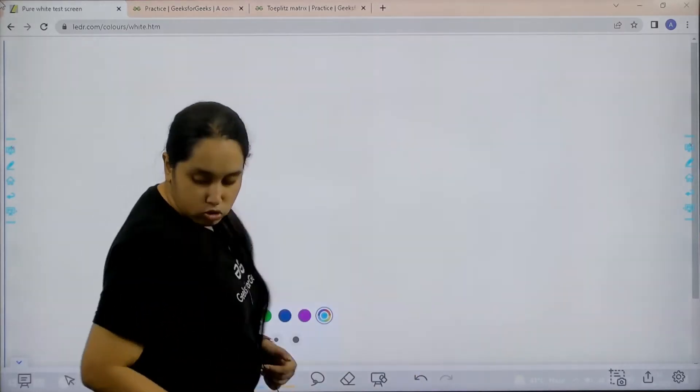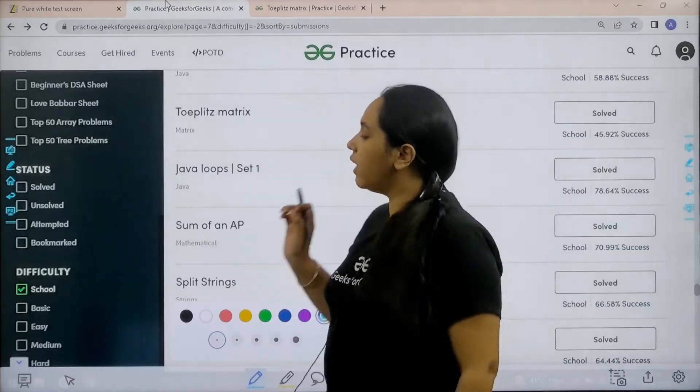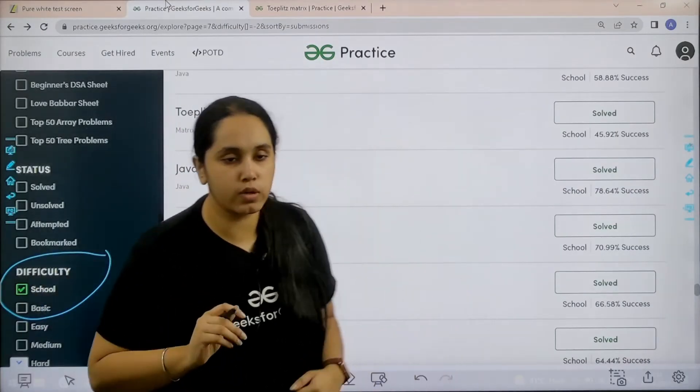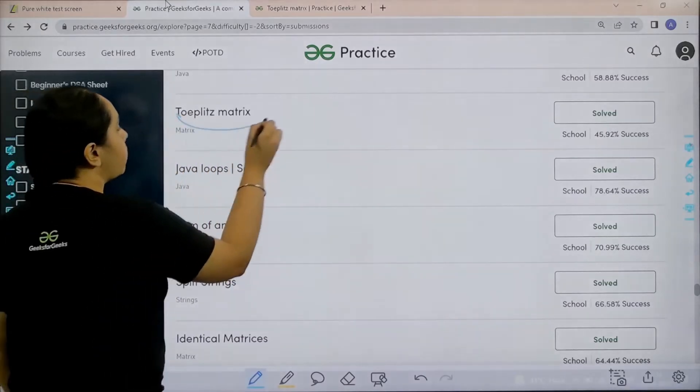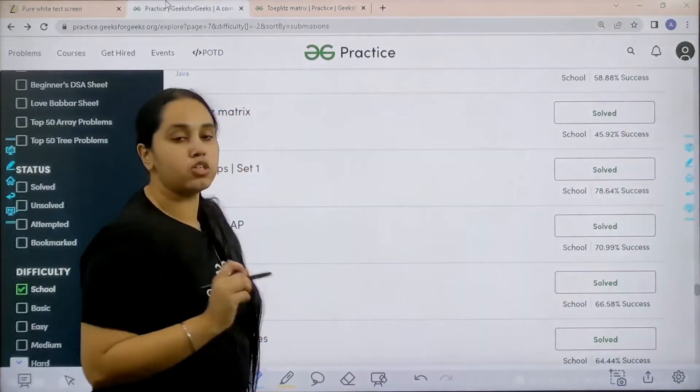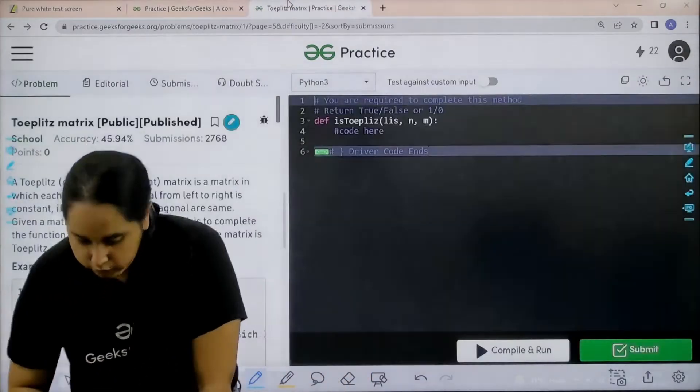So what you need to do is you need to go to the practice portal. In practice portal in the difficulty section you need to choose school. Then you need to find the problem Toeplitz matrix. Once you find it you need to click on solve. So let's solve it.